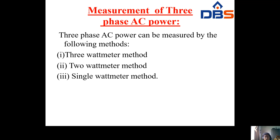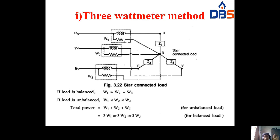Next, we look at how to find three-phase AC power. Three-phase AC power can be measured by the following three methods: the three wattmeter method, the two wattmeter method, and the single wattmeter method. In the three wattmeter method we use three wattmeters; in the two wattmeter method we use two wattmeters; and in the single wattmeter method we use one wattmeter.